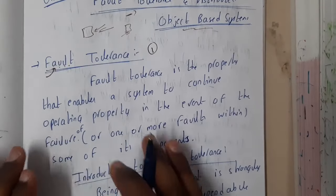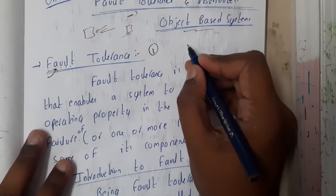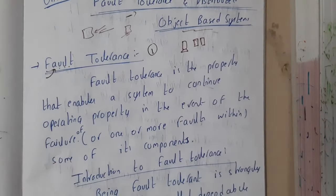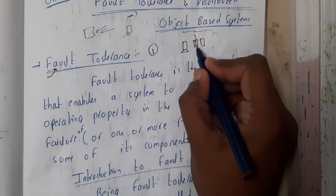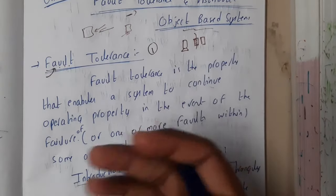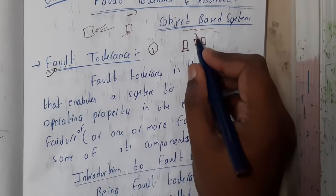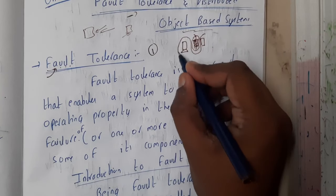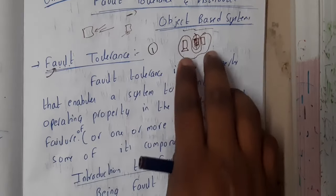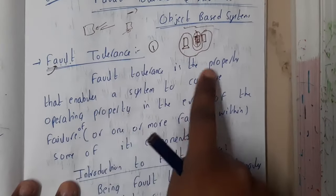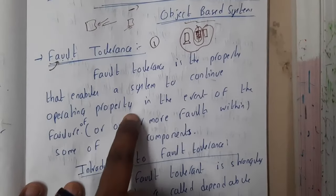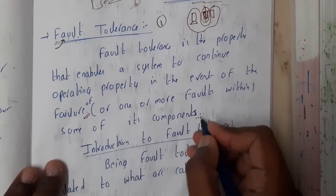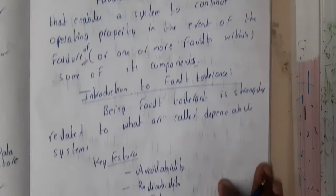The concept of fault tolerance says that assume there is a system with two RAMs. Due to a technical issue, the first RAM has stopped functioning — some kind of electrical issue has occurred and it's not working. Even under that non-working condition, the system should continue operating. Fault tolerance is the property that enables a system to continue operating properly in the event of a failure of one or more of its components.